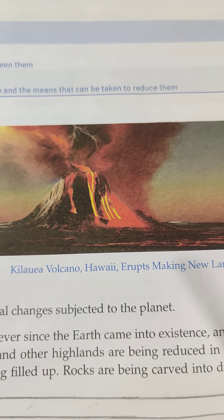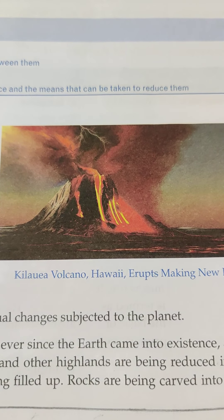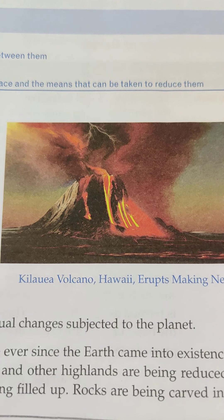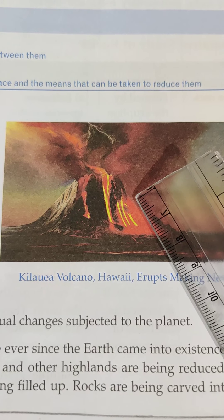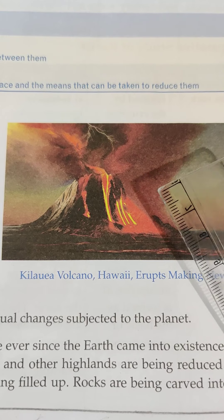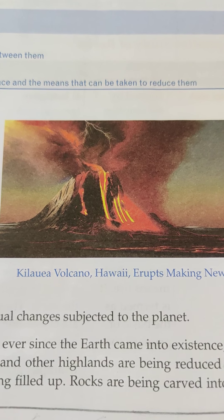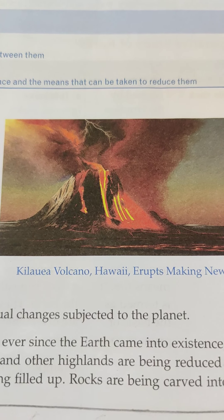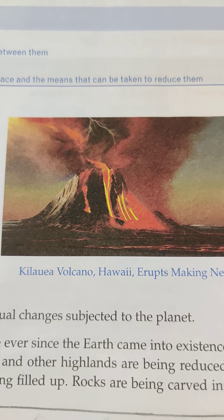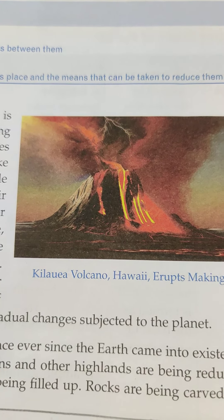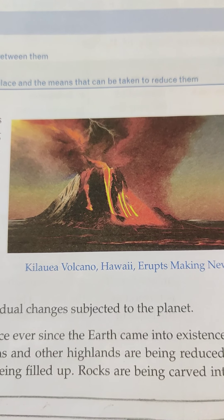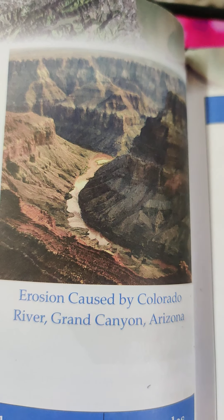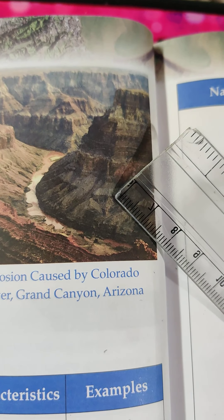The surface of the earth is continuously undergoing some changes. Some of these changes are sudden, like earthquakes and eruption of a volcano. Some are slow changes and they only become visible after thousands of years, like the rounding off of mountain peaks. The Himalayas and the Peninsular Plateau of India are examples of landforms created as a result of these slow changes.